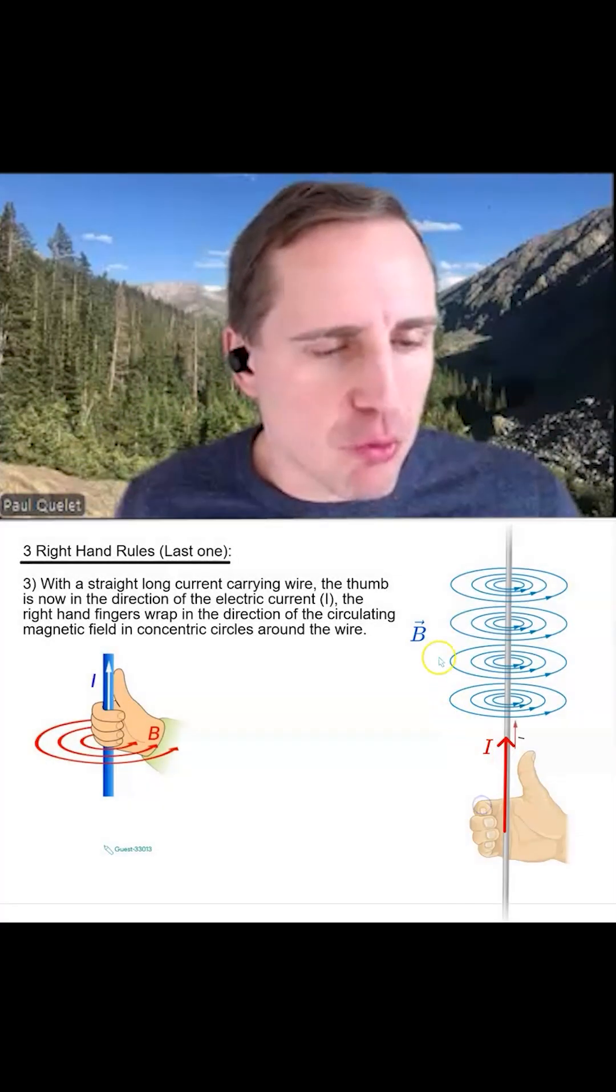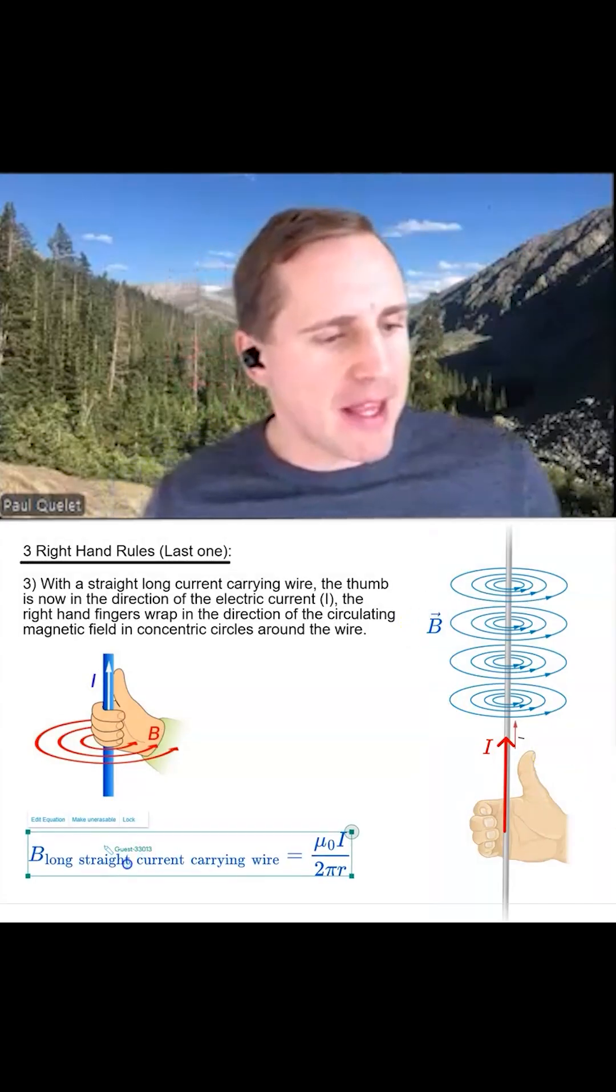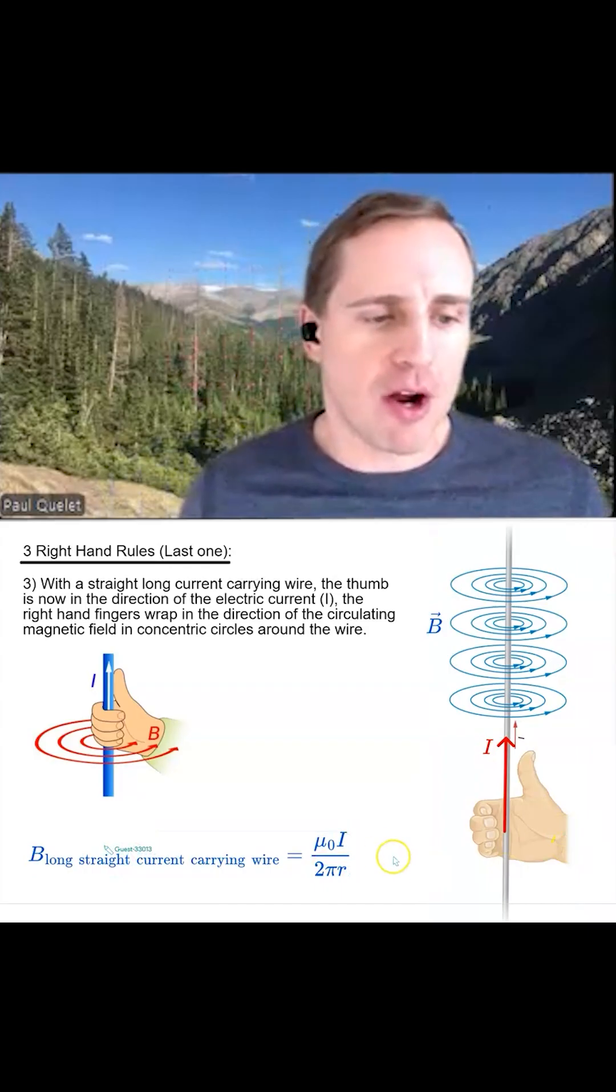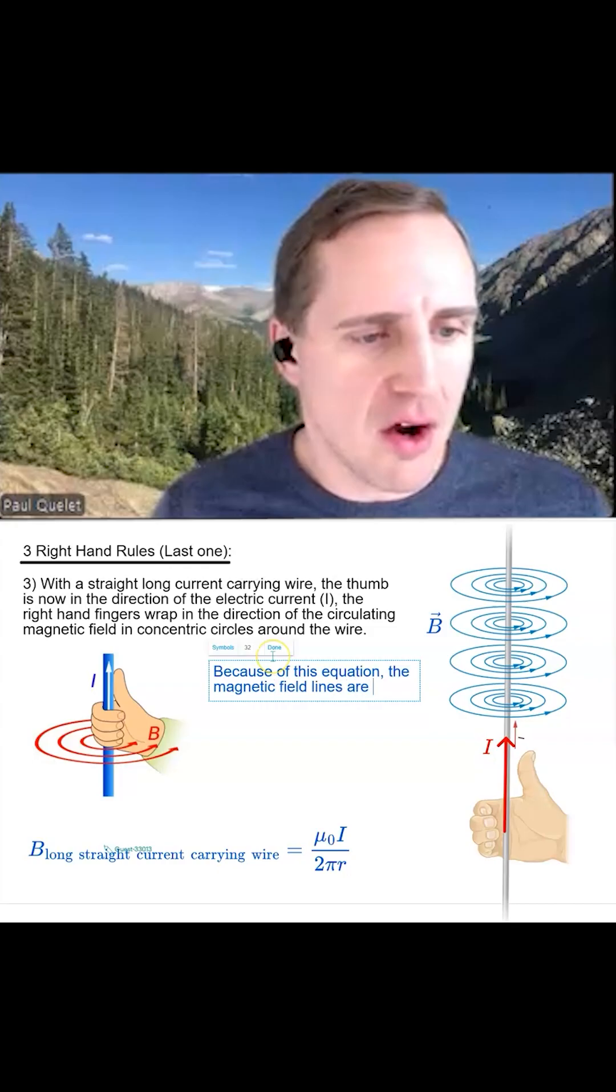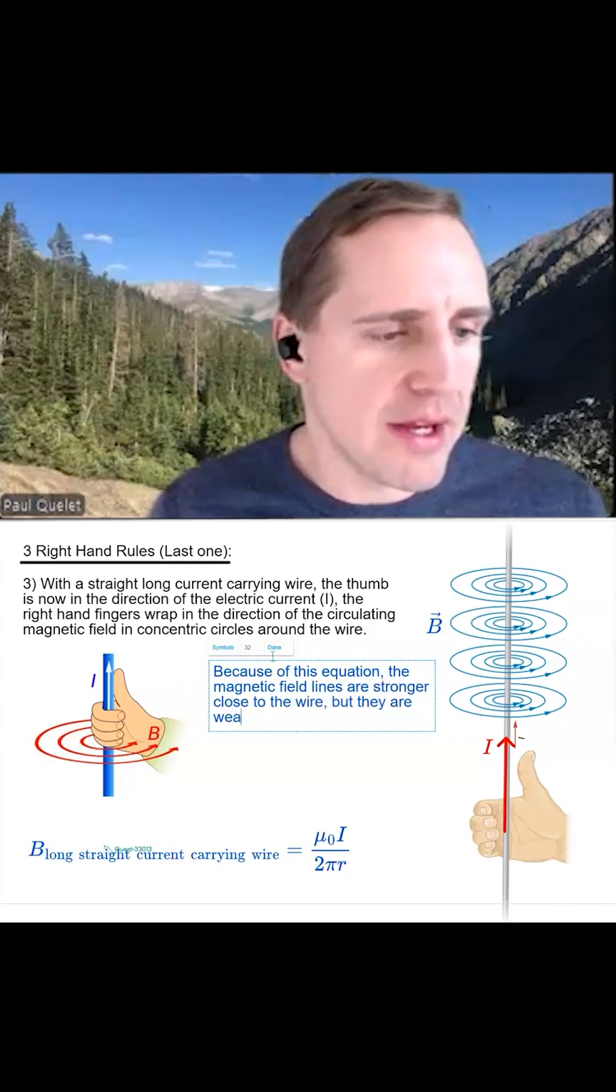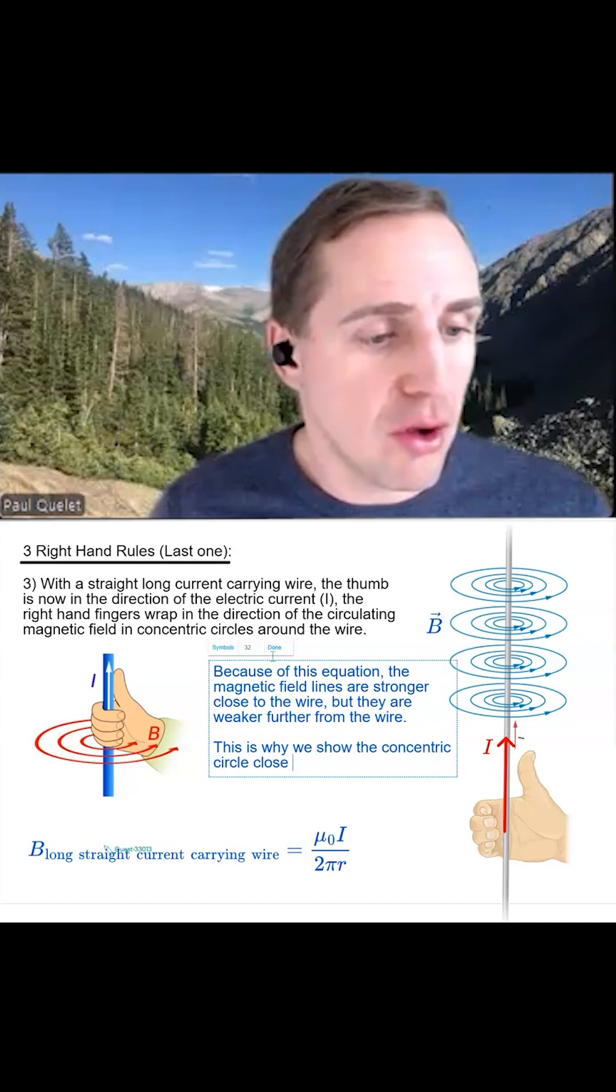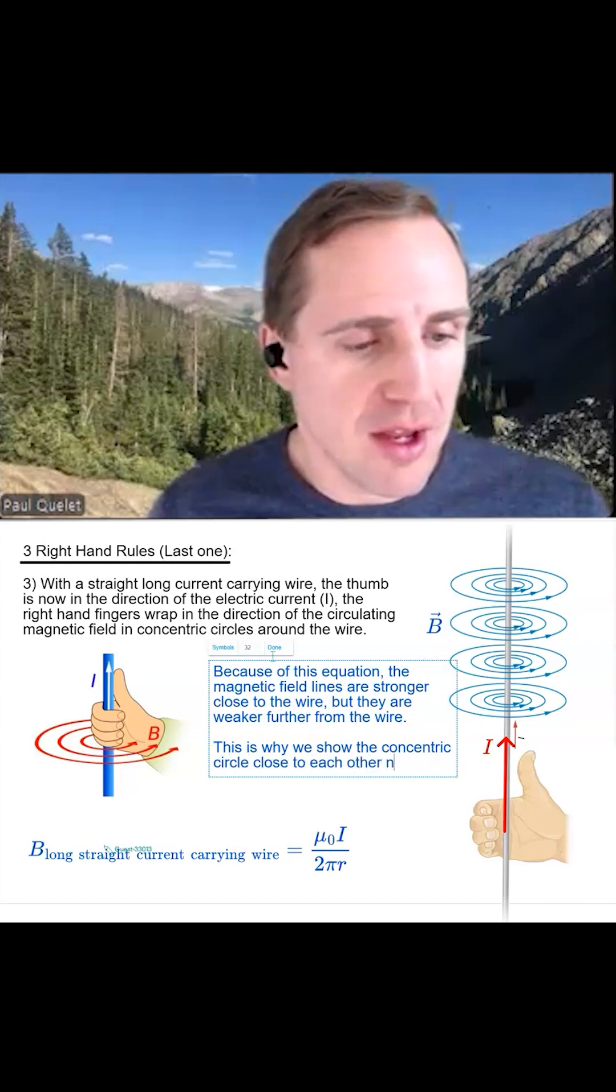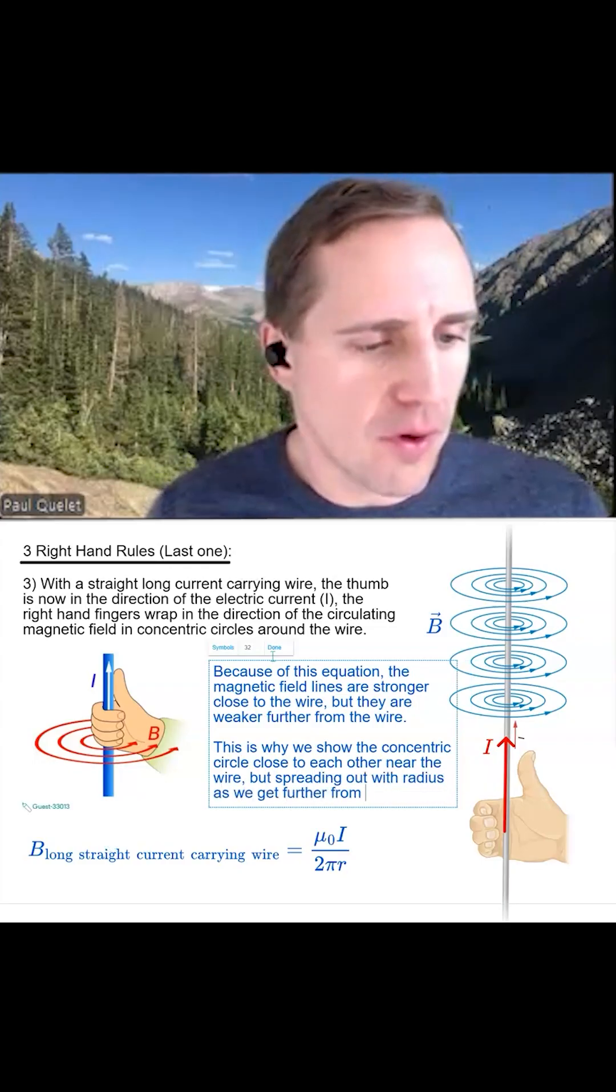Because the third right hand rule I would suggest kind of has a little bit of an equation to go with it. The magnetic field of a long straight current carrying wire is mu not i over 2 pi r. Because of the equation, the magnetic field lines are stronger close to the wire, but they are weaker further from the wire. This is why we show the concentric circles close to each other near the wire, but spreading out with radius as we get further from the wire.